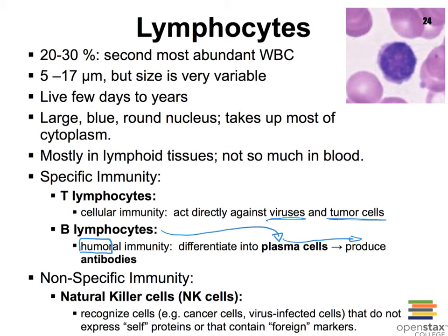The third type of lymphocyte is the natural killer cell, which goes after cancer cells and virus-infected cells. These are cells that express non-self proteins on their surface. Our immune system looks for self-proteins versus non-self-proteins sticking out of cells, and anything that does not look like a self-protein is cause for alarm for the immune system.